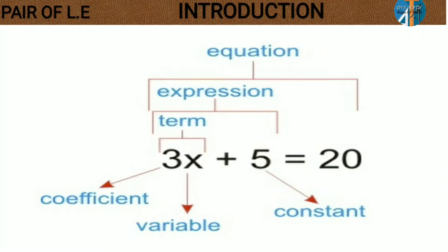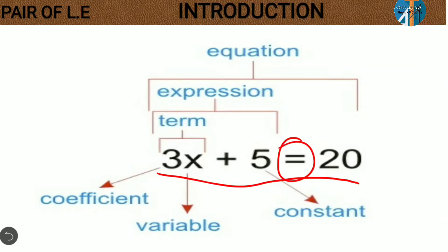First, observe the equation 3x plus 5 is equal to 20. Why are we calling it an equation? Because we have an equal symbol — if you are equating to a number or anything, it is an equation. Now observe the numbers 3 and 5. We cannot replace other numbers in their place; they are fixed. So we are calling them constants.